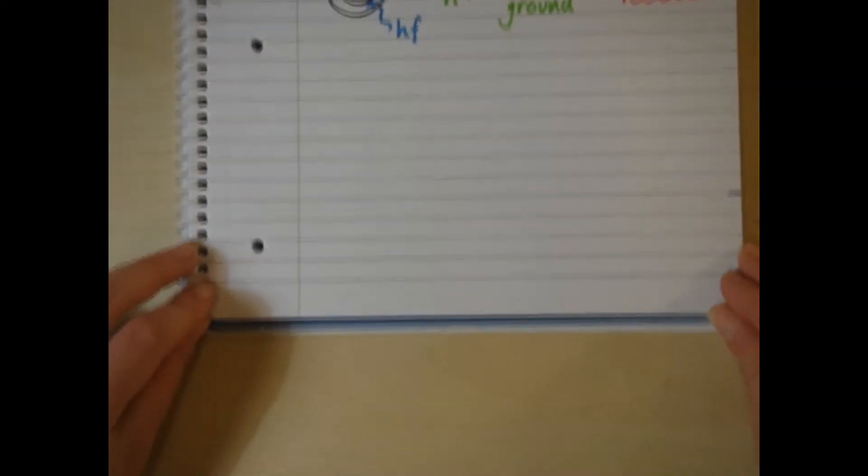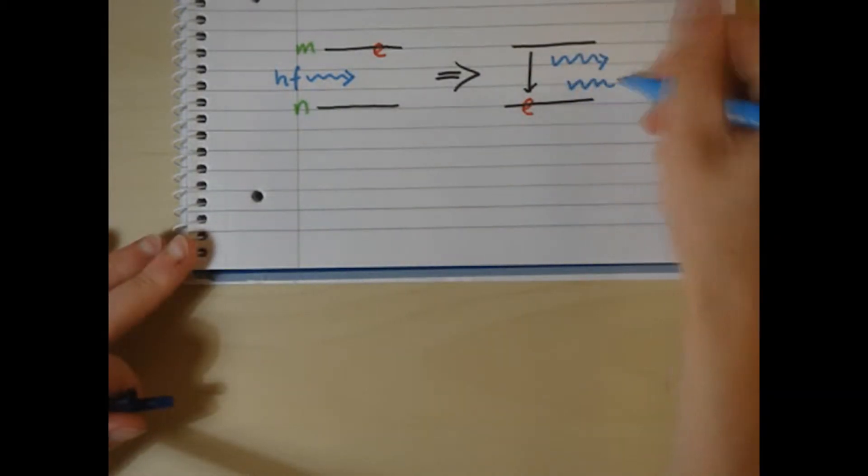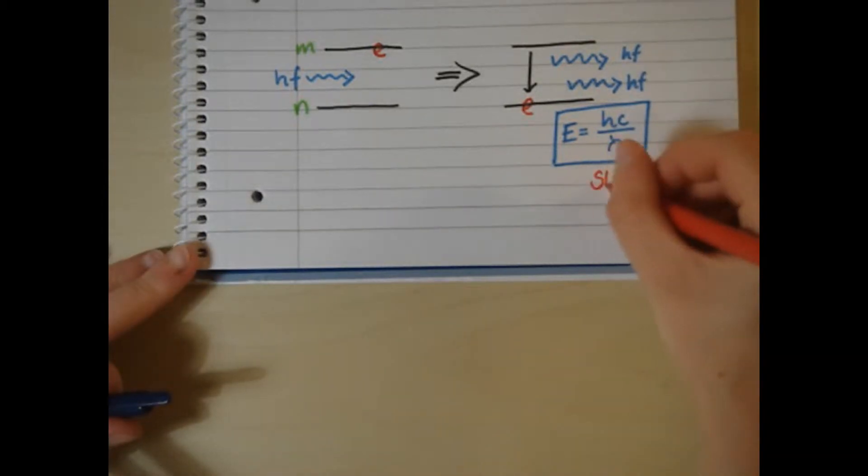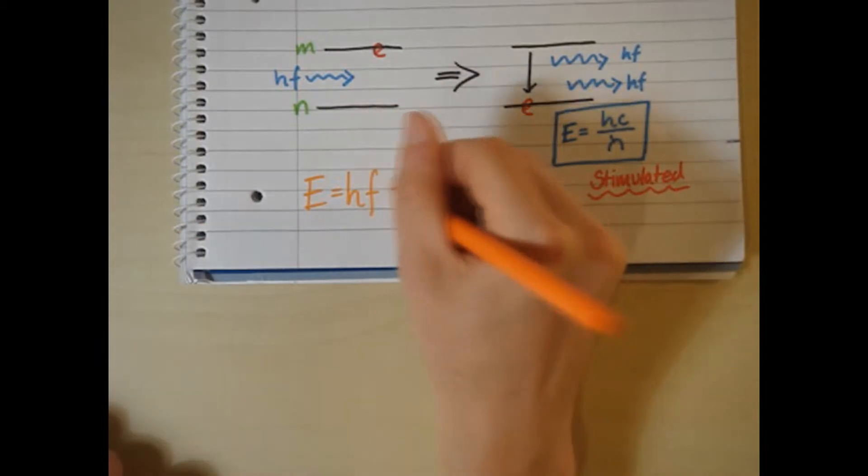In a laser, a photon of specific wavelength travels past the electron of an excited atom, stimulating the electron to jump down from the higher to lower energy level. This emits a photon of the same wavelength as the original incident photon, in order to conserve energy. Both photons therefore have the same wavelength due to E equals hc over wavelength. This is known as stimulated emission. Lasers use this effect to produce coherent light.